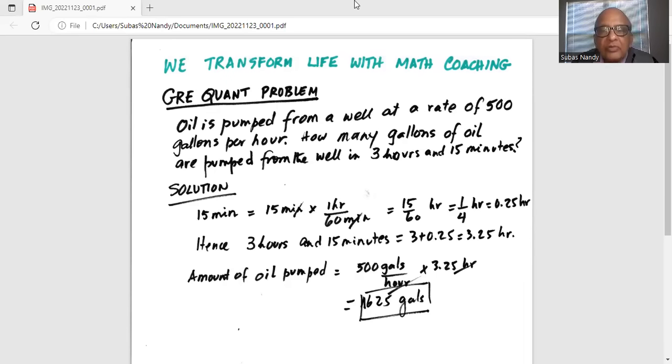First we have to express 15 minutes in terms of hour. So 15 minutes multiplied by 1 hour equals 60 minutes. So 15 minutes multiplied by 1 hour over 60 minutes.